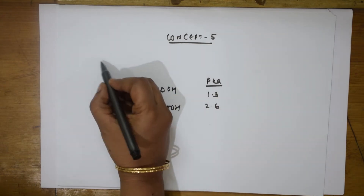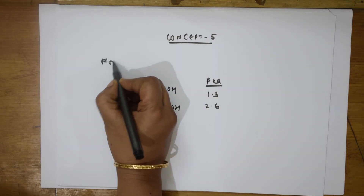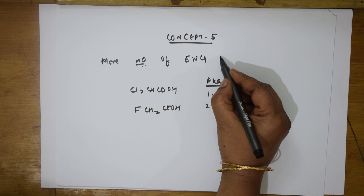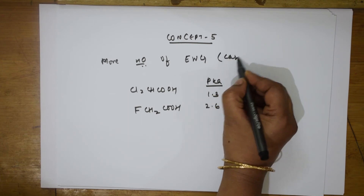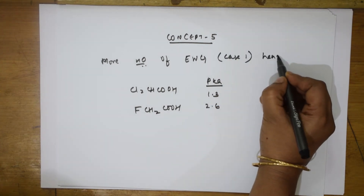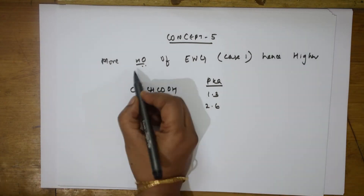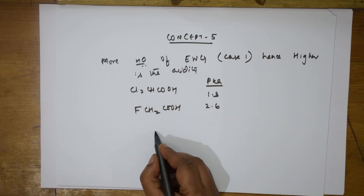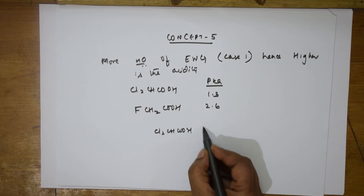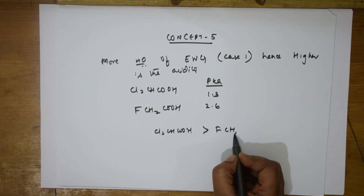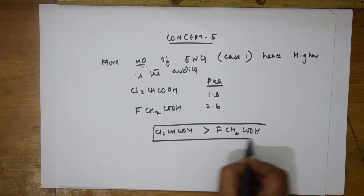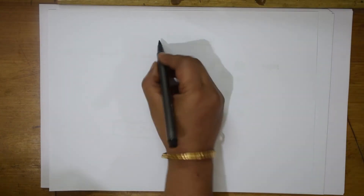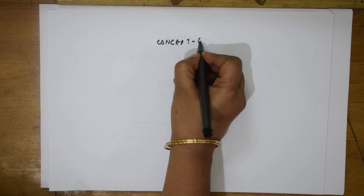So the conclusion is: more electron withdrawing groups in Cl2CHCOOH means higher acidity. Therefore Cl2CHCOOH is a stronger acid than FCH2COOH. Remember this. Now let us move to Concept 6.